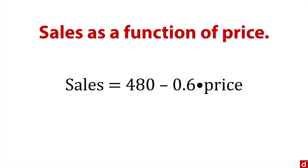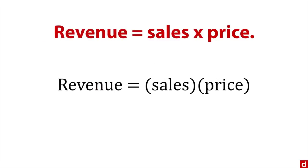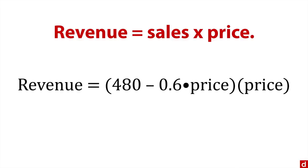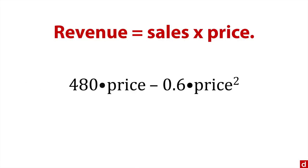This isn't the final thing. Now we turn this into revenue. Revenue equals sales times the price, how many things did you sell and how much did it cost? We substitute sales as a function of price, and after multiplication we get that revenue equals 480 times price minus 0.6 times the square of the price.